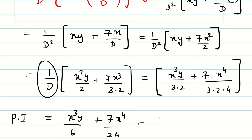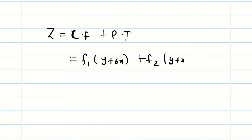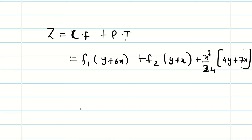If you want, you can simplify further. Taking x cubed outside with 24 as common denominator, we get (x cubed / 24) times (4y plus 7x). So z equals CF plus PI: f1(y plus 6x) plus f2(y plus x) plus x cubed over 24 times (4y plus 7x). Hope you got a clear idea to solve problems on polynomials.